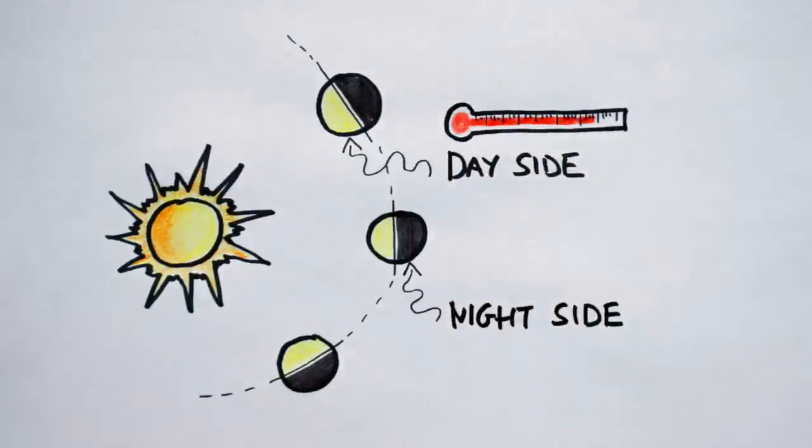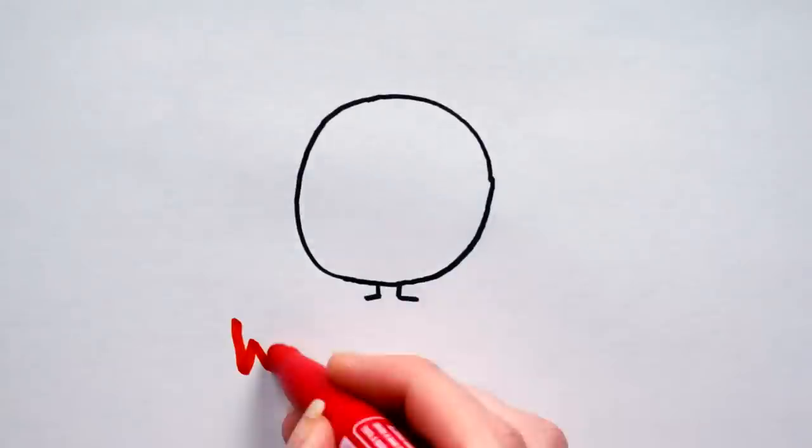Now usually that would mean insanely high temperatures on the day side and insanely low temperatures on the night side. But high winds on these hot Jupiters help distribute the heat around the planet, resulting in a relatively low temperature difference between the two sides. Emphasis on relative here.